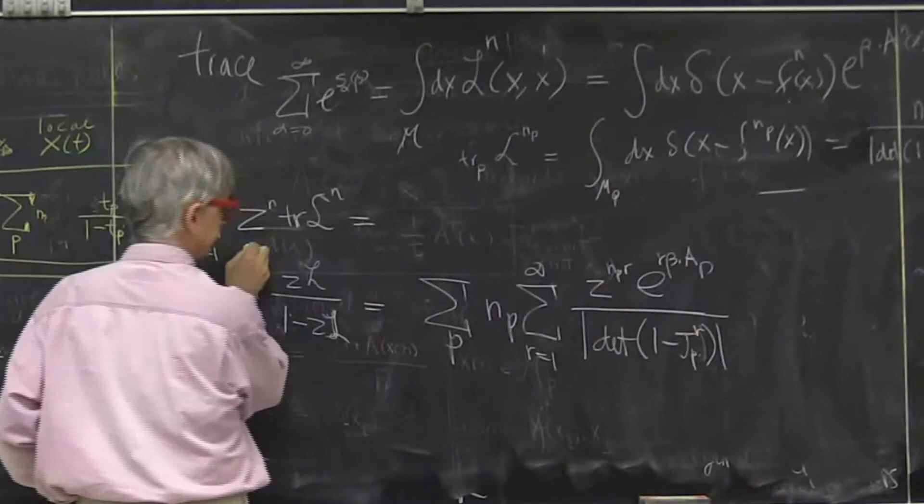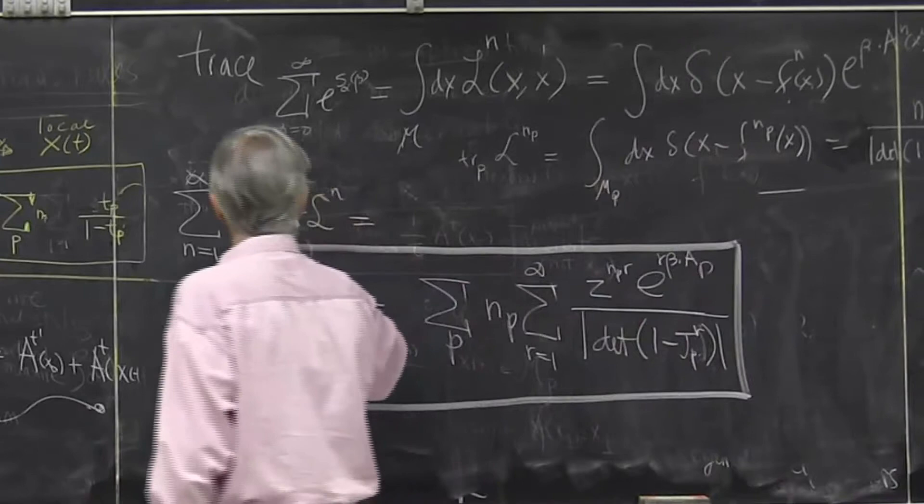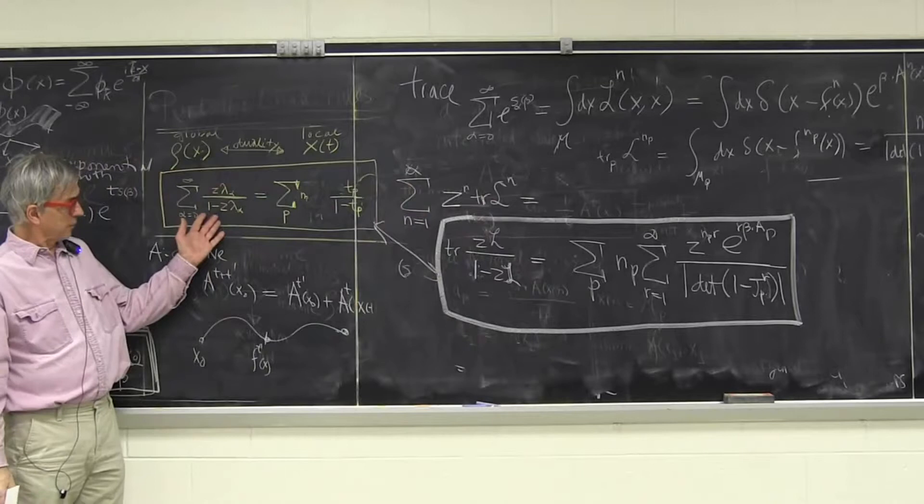So now, the first trace formula, this one, these are the same formulas. The first trace formula, because, of course, trace is the sum of the eigenvalues, that's obvious. The first trace formula is a finite matrix. It was 1's and 0's, and you assign the weight to each of these things.